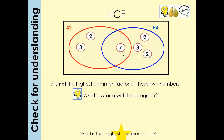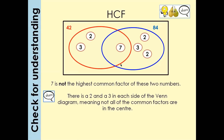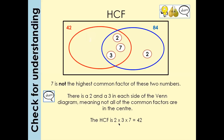Seven is not in the highest common factor area because the common factors of 42 and 84 are 2 and 3. So instead of seven in the center, the numbers should be two and three. When you multiply two and three together, you get six — the highest common factor of 42 and 84 is six, not seven. We can see that two is common and three is common, so they go in the middle. To find the HCF from the Venn diagram, multiply all numbers in the middle: 2 × 3 × 7 = 42.